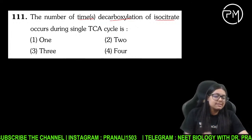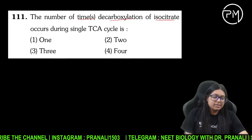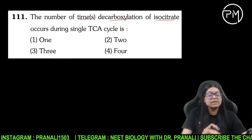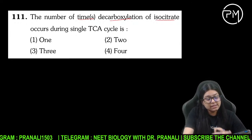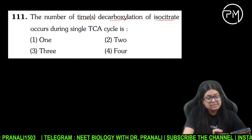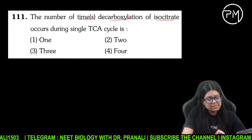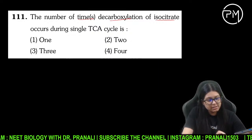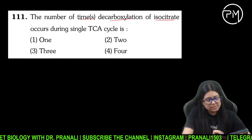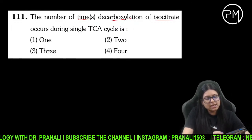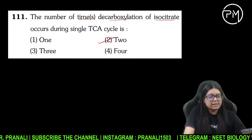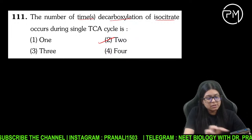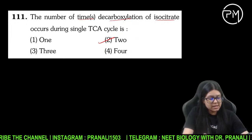Ek TCA cycle mein kitni baar decarboxylation hota hai? Isocitrate ka — iska answer jo bhi bata sakta hai bataaye. It is two times — kitne times? Two times ho jayega.